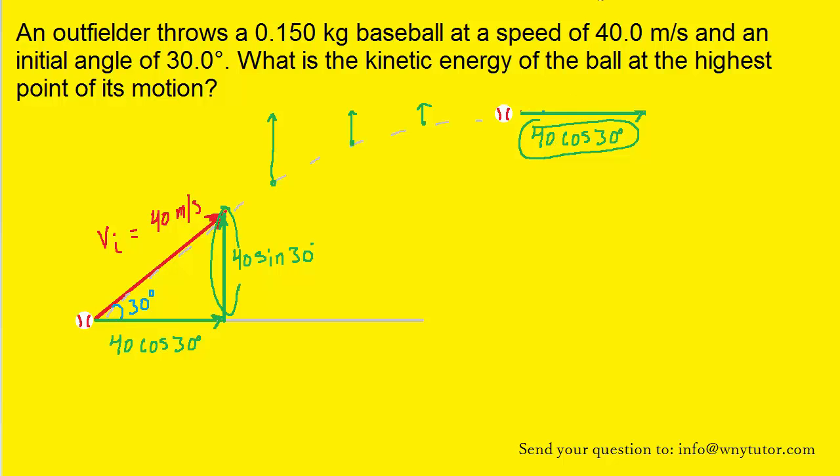So that's going to allow us to calculate the kinetic energy at that point, because we know that kinetic energy is equal to one half times the mass of the object times its speed squared. Well, again, at the maximum height, this is the speed of the baseball, the 40 cosine 30.